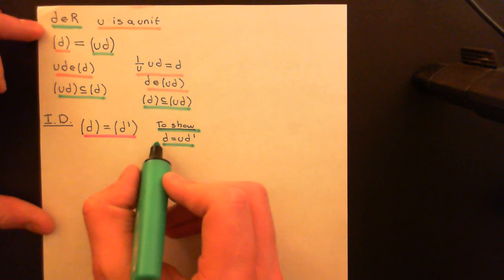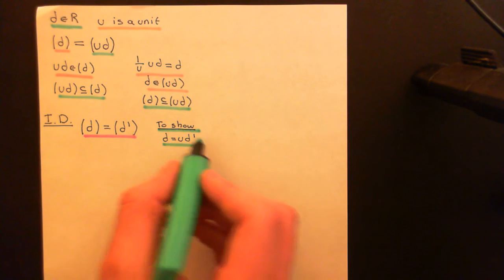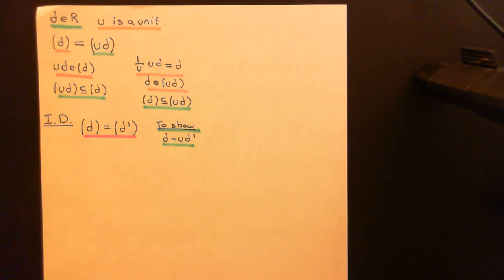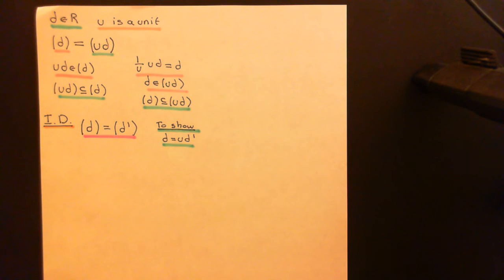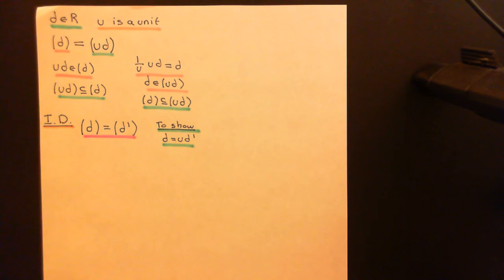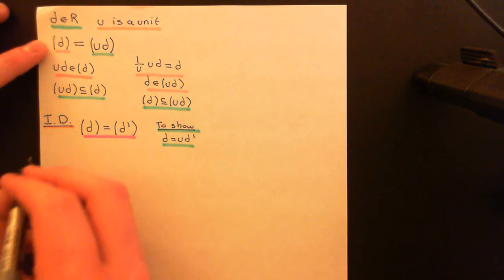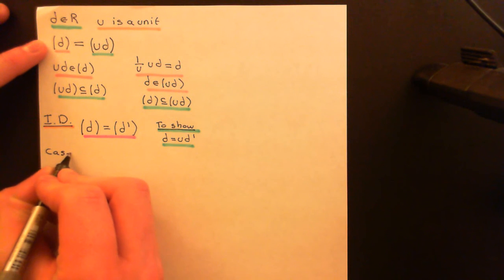You could write it the other way around since U is a unit — multiply both sides by the multiplicative inverse of U to get D' as a unit times D. Remember, an integral domain is fancier than just a commutative ring: it's a non-zero commutative ring that obeys the property that if you multiply two non-zero elements together, you end up with another non-zero element. To prove this, we split into two cases. Case one: what if one of these elements is equal to zero?